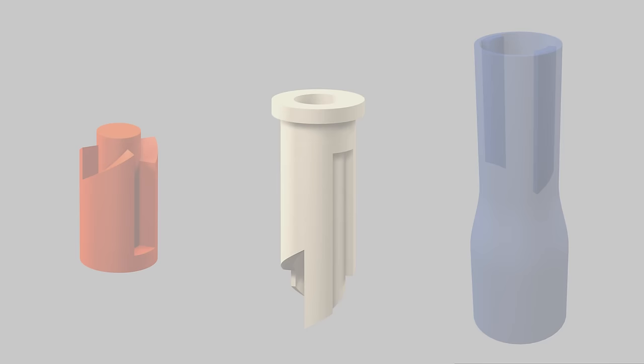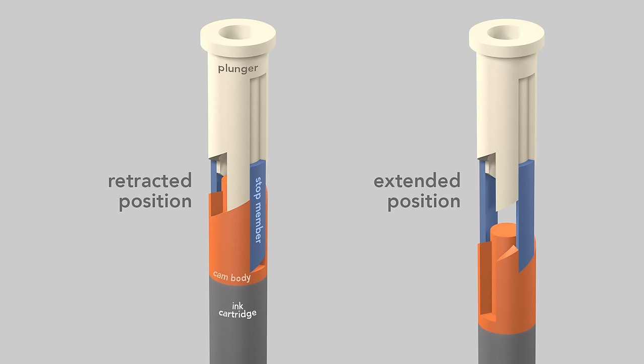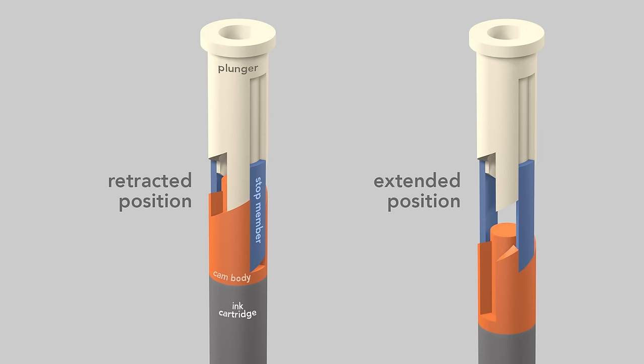The pen can be in either of two positions. The retracted, non-writing position where the tip of the cartridge is inside the barrel, or in the extended, writing position where the cartridge's tip projects from the barrel. To see how the plunger, cam body, and stop members interact, I've broken the cam movements into eight steps.